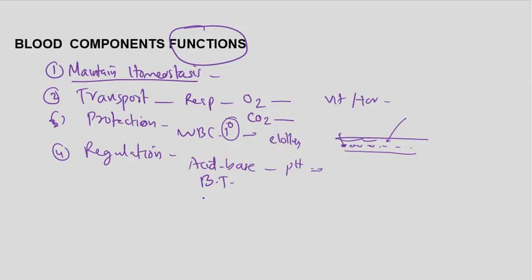The fifth function is storage. Blood provides temporary storage for nutrients and waste materials. In summary, blood functions include transport, regulation, respiration, storage, and nutrition.